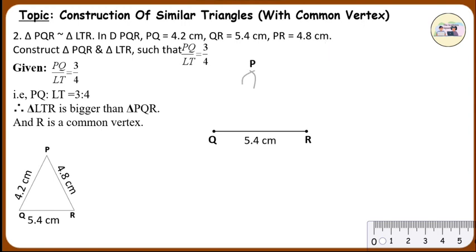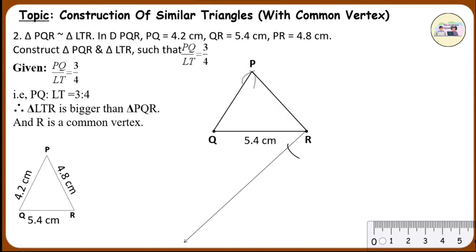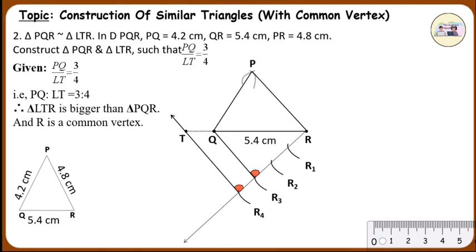Draw an angle, preferably an acute angle, from point R, since R is the common point in both the triangles. Draw 4 arcs of equal measurement from point R, since the ratio is 3 is to 4 and 4 represents the bigger triangle. Name them as R1, R2, R3, and R4. Join R3 with point Q, since the ratio is 3 is to 4 and 3 represents the given triangle. Now draw a line parallel to segment QR3. Extend segment QR such that the parallel line meets the line QR — this point is T. Now draw a line parallel to side PQ from point T. Extend side PR such that this parallel line meets segment PR. Mark this point L. To draw parallel lines, you can use the property of corresponding angles.